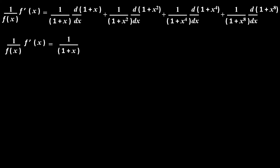In the first term, derivative of (1+x) is 1, so the first term is 1/(1+x). Plus, in the second term, derivative of (1+x²) is 2x — derivative of 1 is 0 and derivative of x² is 2x — so the second term is 2x/(1+x²). Plus, in the third term, derivative of (1+x⁴) — derivative of 1 is 0 and derivative of x⁴ is 4x³ — so the third term is 4x³/(1+x⁴).